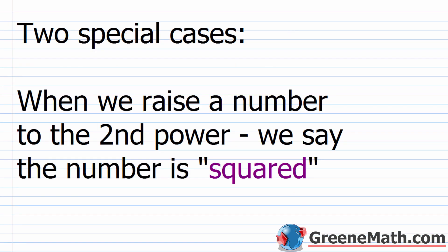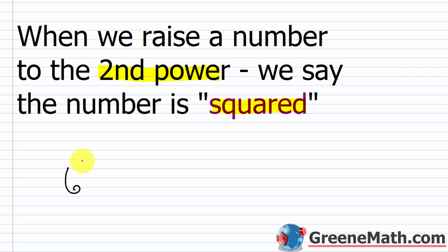There are two special cases to know. First, when we raise a number to the second power — meaning an exponent of 2 — we say the number is squared. Write this down, because you'll hear it all the time. Someone might ask 'what is 6 squared?' or 'what is 4 squared?' When we say squared, we mean raised to the power of 2. So '6 squared,' '6 to the second power,' and '6 to the power of 2' all mean the same thing.